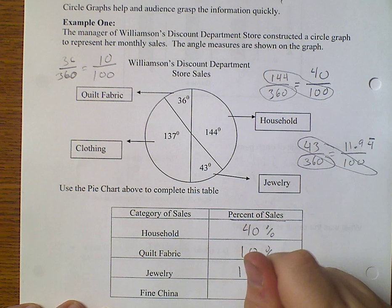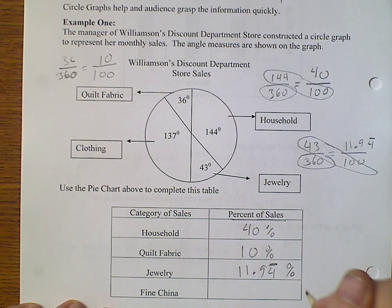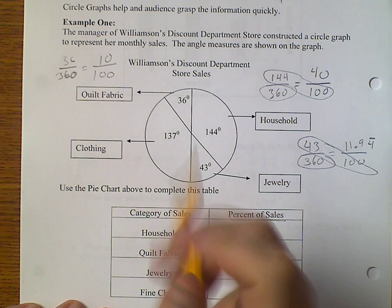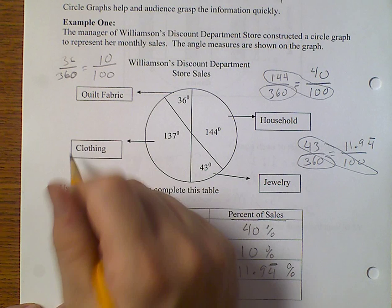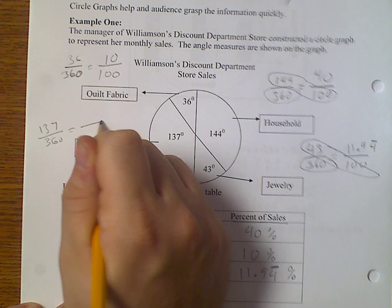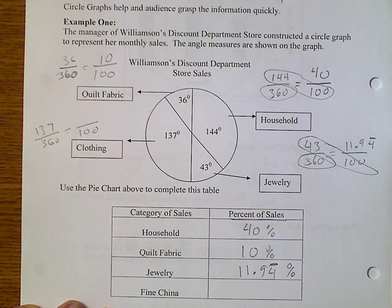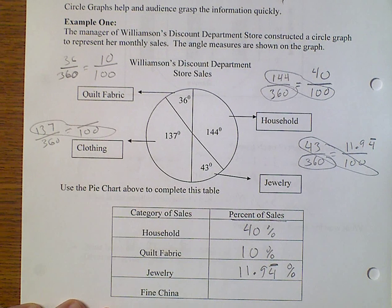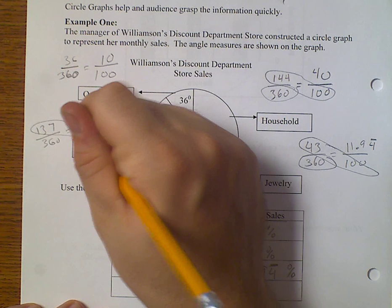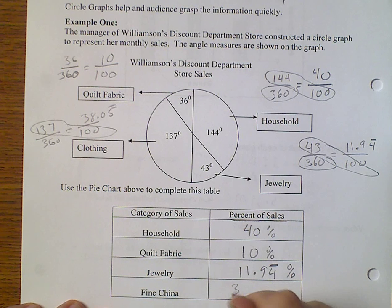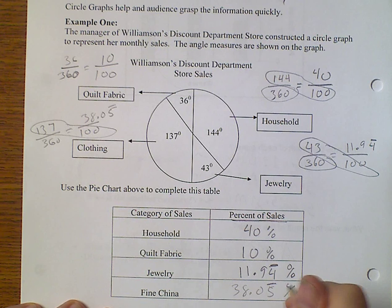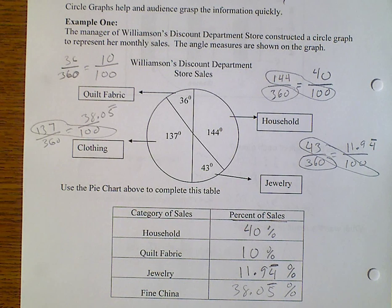So that's 11.94 repeating percent. And then our fine china at 137 degrees over 360 equals something over 100. Just cross multiply and divide. And I get 38.05 repeating. Percent. And if you add all these up, you would see that you get 100. Because this 4 repeating, this 5 repeating gives you 9 repeating. Which is in fact 1. Which gives you that percent. And so this is our pie chart.